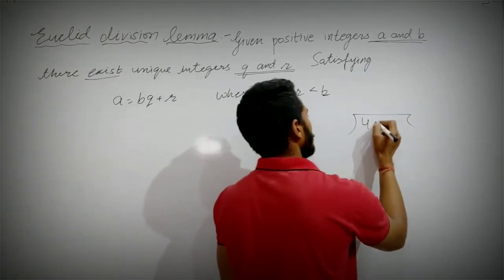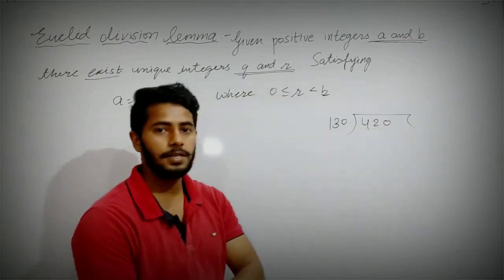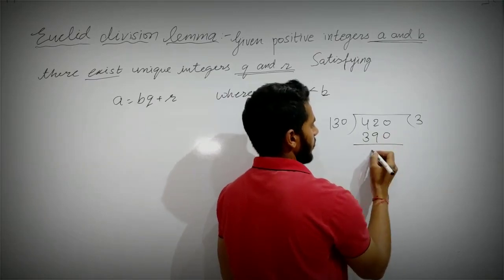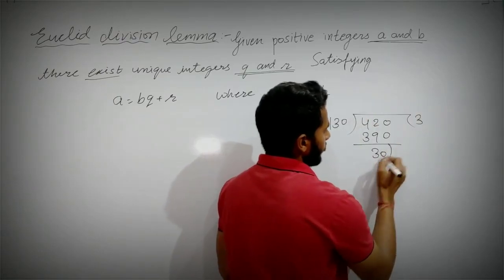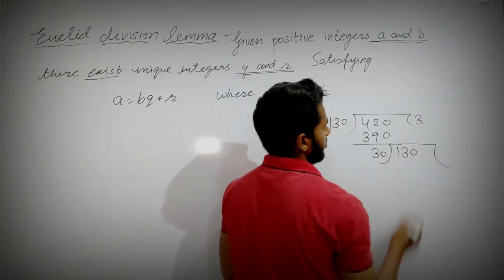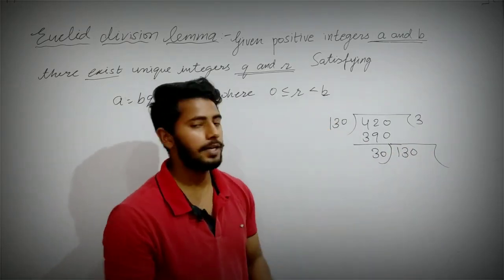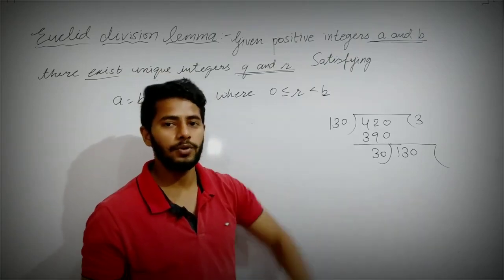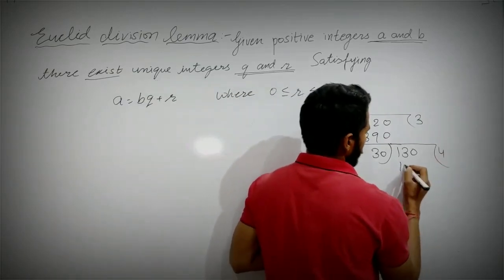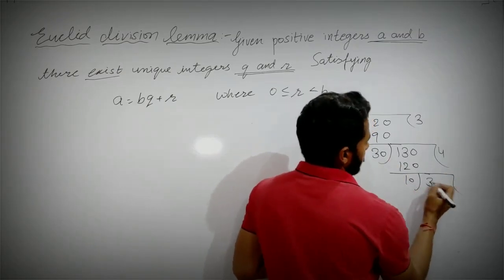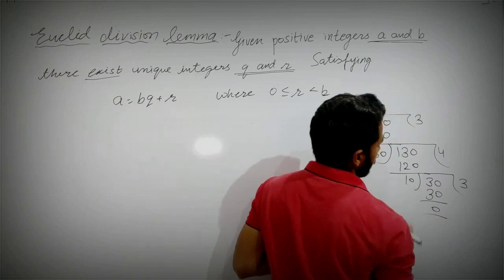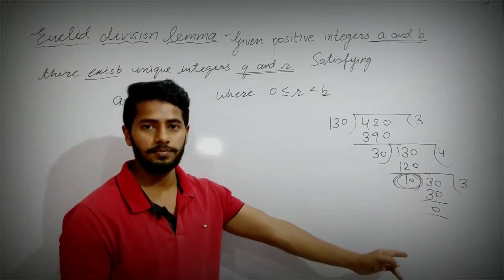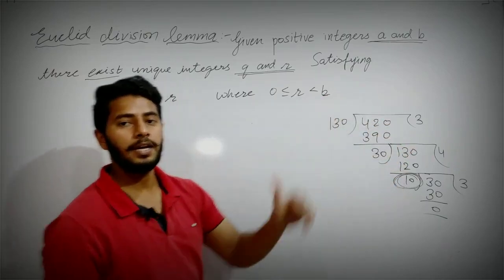How do we find HCF using Euclid's Division Lemma? Take any two numbers, like 420 and 130. We need to find their HCF. Divide: 420 ÷ 130 — 3 times gives 390, remainder is 30. Now after division, the remainder becomes the new divisor and the old divisor becomes the new dividend.